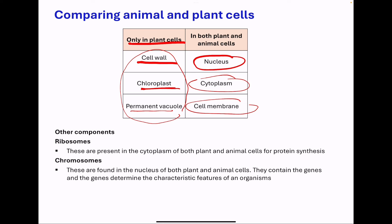The other components we've not talked about are ribosomes. These are present in the cytoplasm, and this is where protein synthesis takes place. And then the chromosomes. These are found in the nucleus of both plant and animal cells, and they contain the genes.